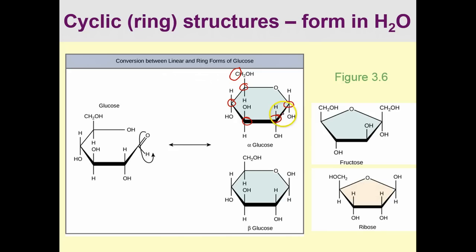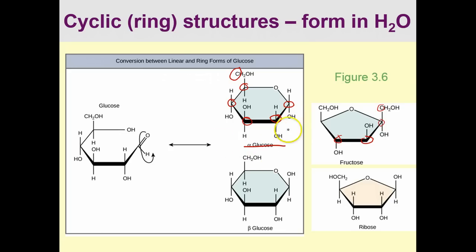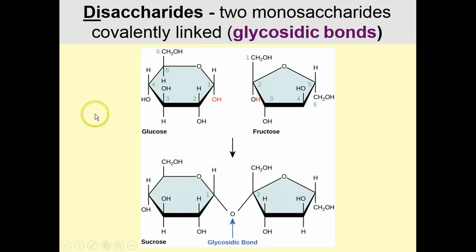There are two forms of glucose depending on whether the hydroxyl groups are up or down. In alpha glucose we have hydroxyl groups going down, down, up, down. And in beta glucose we have up, down, up, down. So those are monosaccharides — one sugar group.